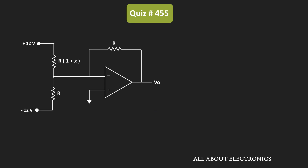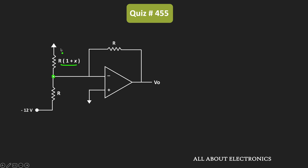Similarly, let's find the output voltage when minus 12V is acting alone. At that time, we assume plus 12V is connected to the ground terminal. Once again, because of the virtual ground, this node acts as a ground terminal, and the other terminal of this resistor is also connected to ground. That means no current flows through this resistor — it acts as if it is not connected in the circuit.